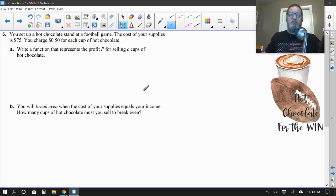All right, I wanted to save this slightly tougher word problem for me to show you how to do. You set up a hot chocolate stand at a football game. Okay, the cost of your supplies is $75. You charge $0.50 for each cup of hot chocolate. All righty. Write a function, probably as an equation, we can choose that method, that represents the profit, okay, the amount of money you make for selling C cups of hot chocolate.